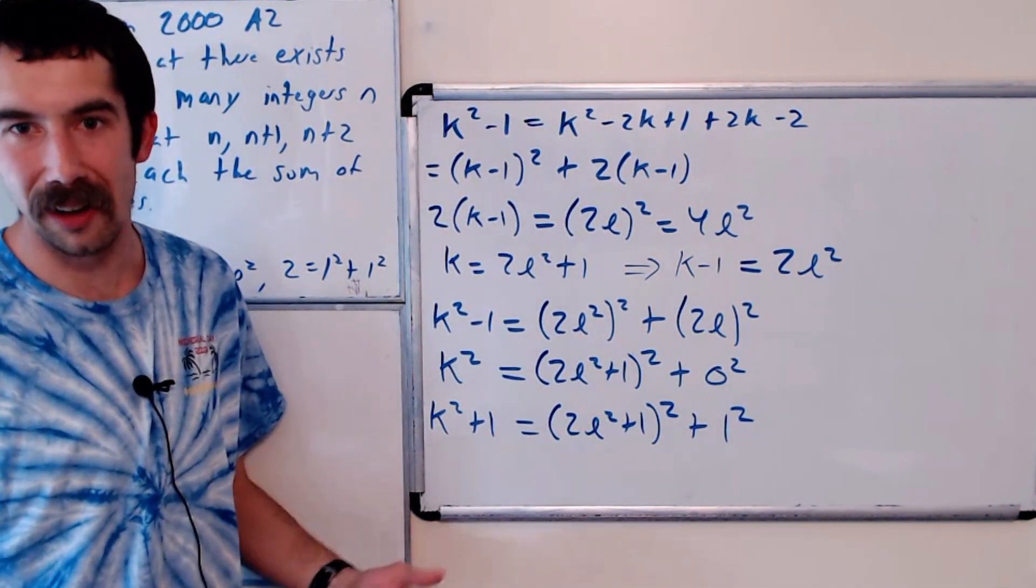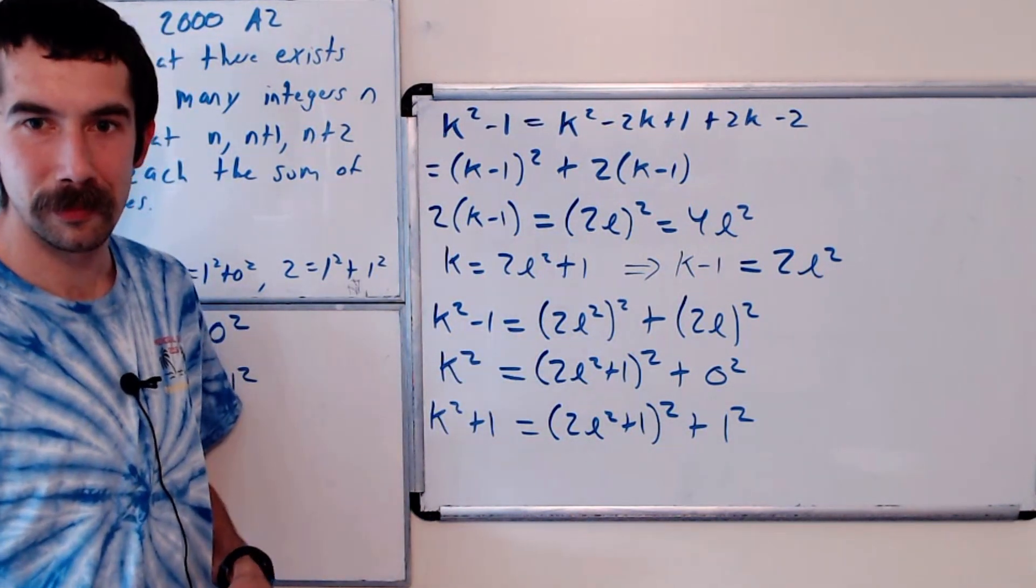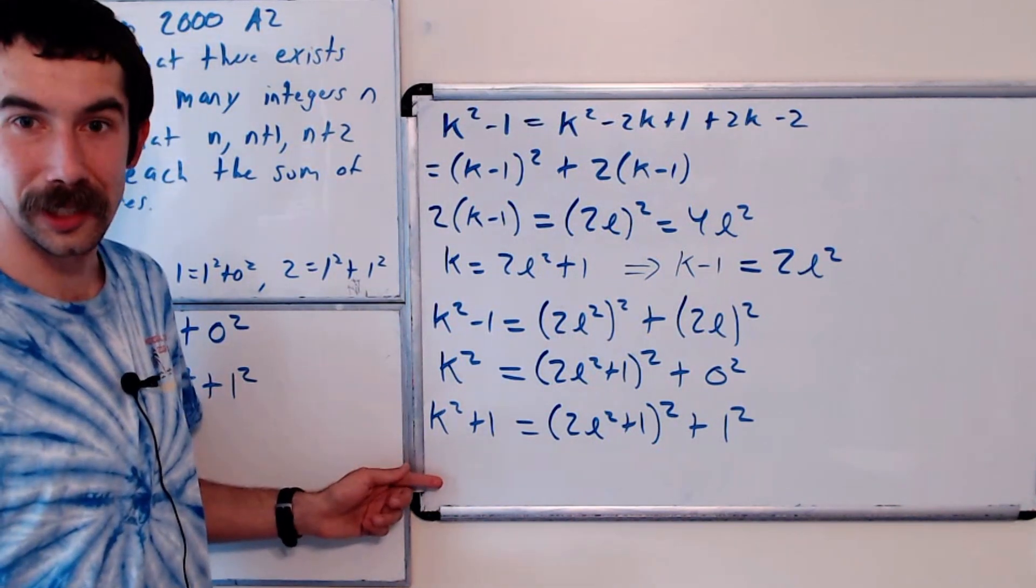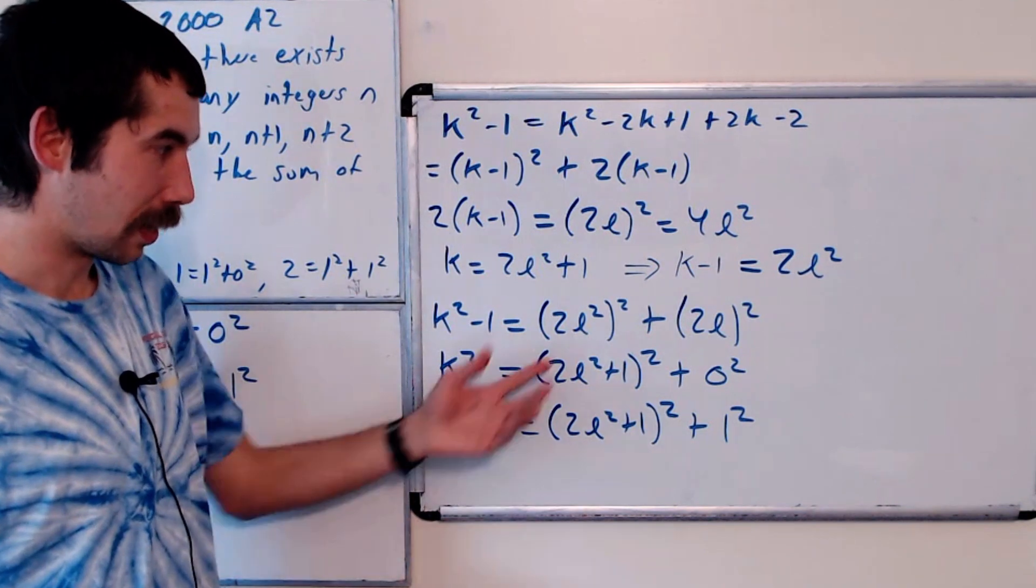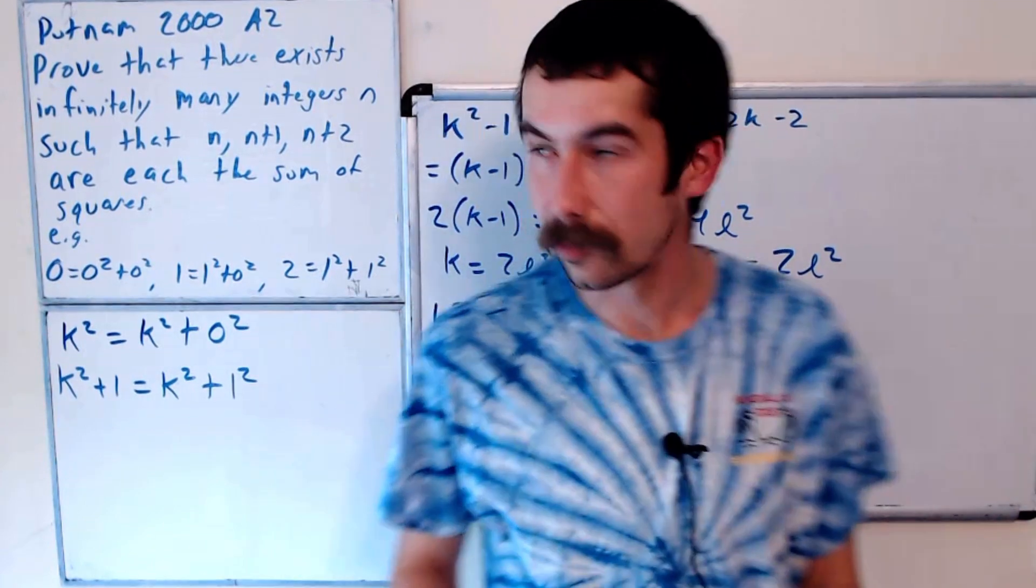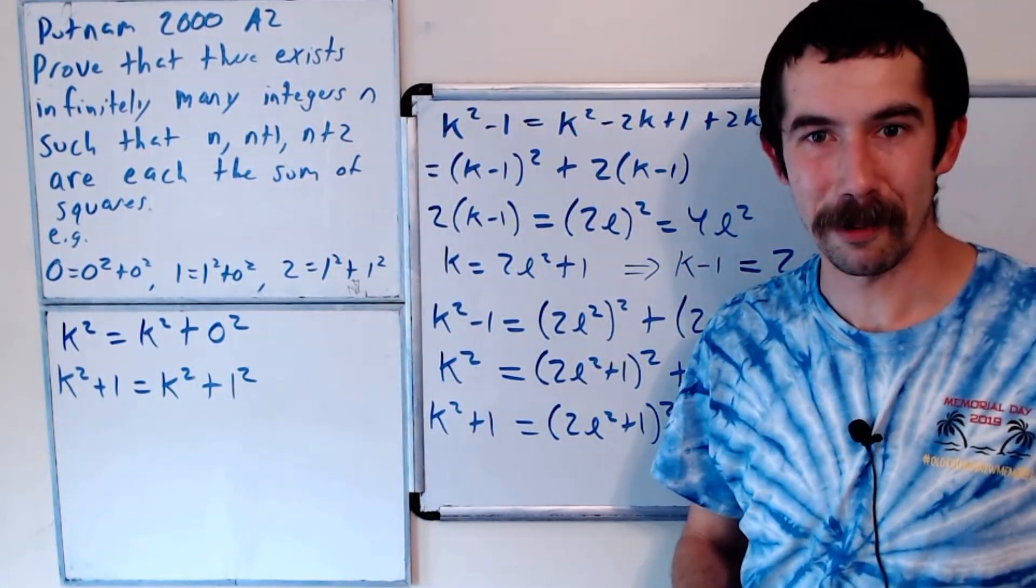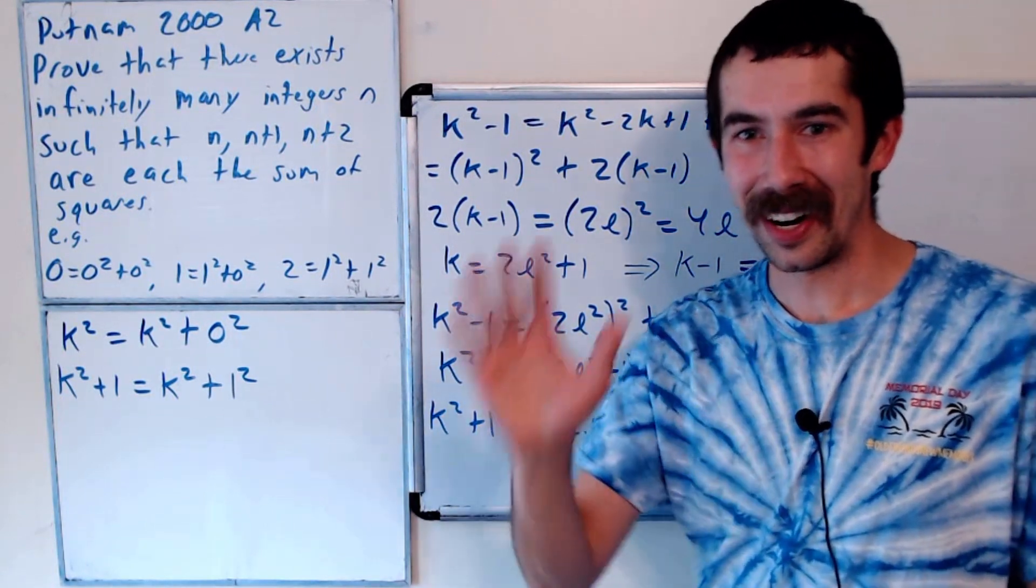And there's no restrictions on l other than l has to be 0 or greater. So for each l, this gives us three consecutive integers that are each the sum of perfect squares. And since there's infinitely many values that l could take on, there are infinitely many triplets, n, n plus 1, and n plus 2, that are each the sum of squares. So I know it's a Putnam problem, but it wasn't too bad. All right. Thanks for watching.